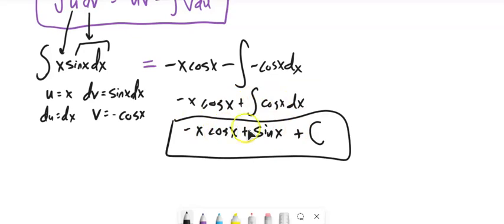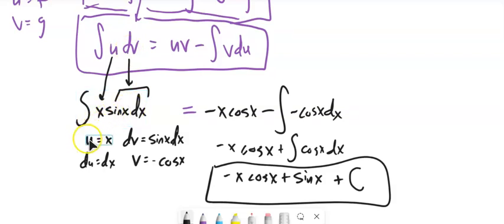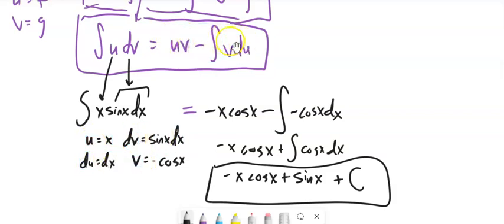If I was not sure about this answer, I could take the derivative of it and get back the original integrand. So here's what I want you to notice: we break up what's inside our integral into a function and the derivative of another function. We pick our pieces — we'll talk about ways to pick those pieces. If u is x and dv is sine x dx, then we know what du has to be and what v has to be, and we substitute them in.